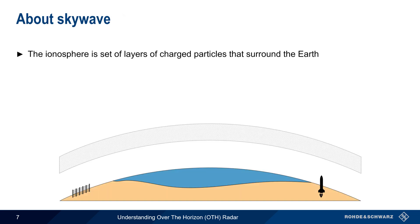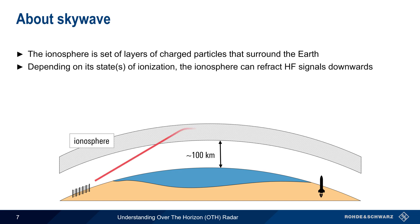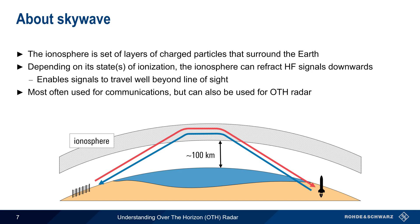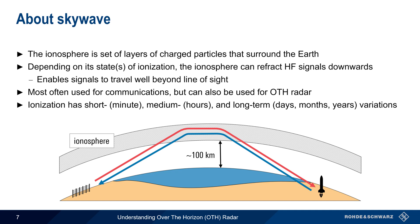Skywave propagation uses the ionosphere, which is a set of layers of charged particles that surround the Earth at an altitude of about 100 to 300 kilometers. Depending on its state of ionization, the ionosphere can refract or bend HF signals downwards, and therefore signals which encounter the ionosphere at an appropriate angle can travel well beyond the line of sight. One important thing to keep in mind is that the ionosphere is constantly changing, with different mechanisms causing short, medium, and long-term variability. Compensating for or adapting to this variability is necessary for efficient use of skywave.